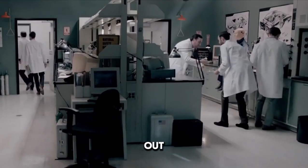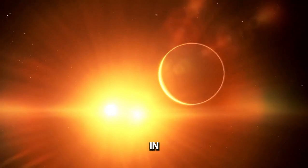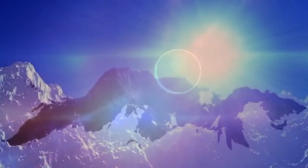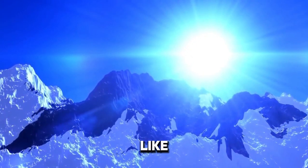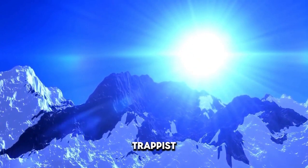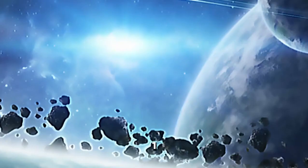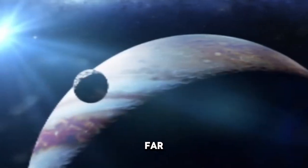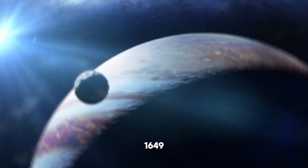There are other planets out there that share similarities with Earth in terms of temperature or size. Some notable ones include Trappist-1 planets like Trappist-1e, Trappist-1g, and Trappist-1d, as well as TOI-700d. These are not too far away, unlike Kepler-1649c, which requires quite a long journey.